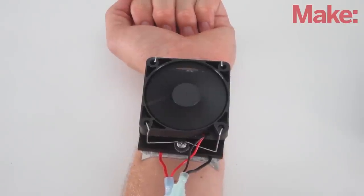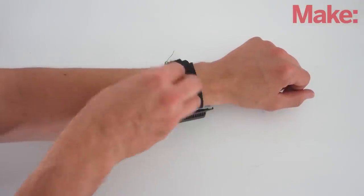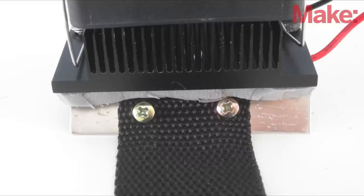Now you need a way to attach the cooling unit to your wrist. To do this, I used a pair of fabric straps with velcro. To attach them to the plate, I used another set of machine screws.